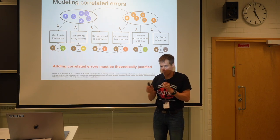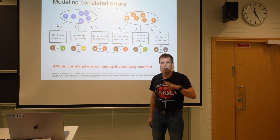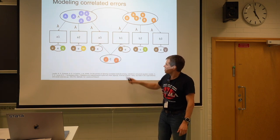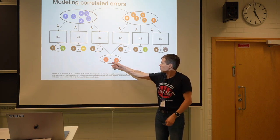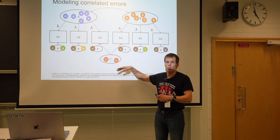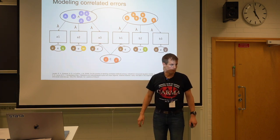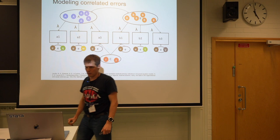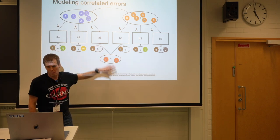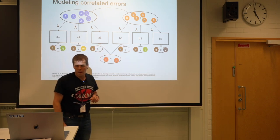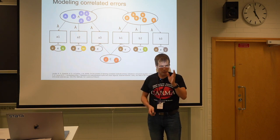CFA allows us to model this kind of imperfection in our data, which is one of its key advantages. If we want to be more rigorous, instead of specifying that errors can be correlated, we could add an additional factor C — call it 'quality of personnel.' This is what's called a bifactor model, because some items load on more than one factor. Adding correlated errors or additional factors must be theoretically justified.